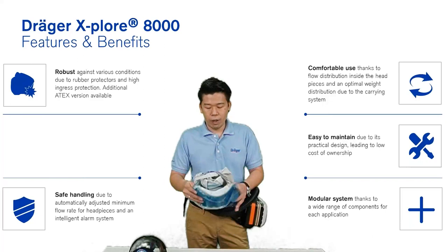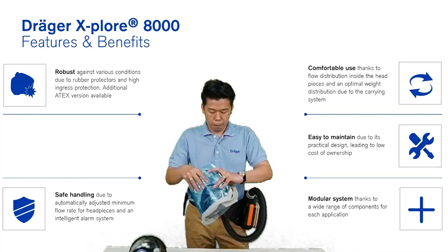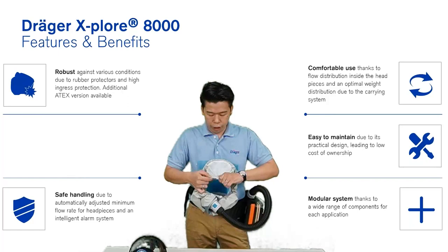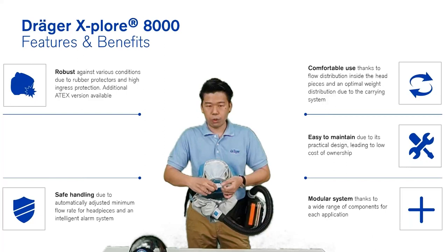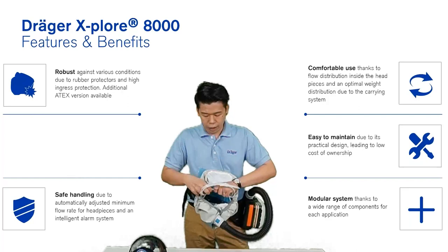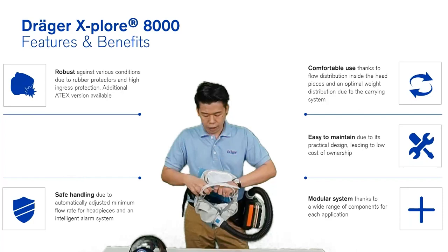Once everything is done, you can start to don the set. All our Draeger hoods come with a loop at the bottom for easy donning and removal after use. On the side of the hood, you will find the head harness. To adjust to your suitable head circumference, there is a fast adjustment system — press from the top and bottom to do the adjustment. Similarly, inside the hood there is also a fast adjustment for the height of the hood, which you can adjust to whichever size you require.